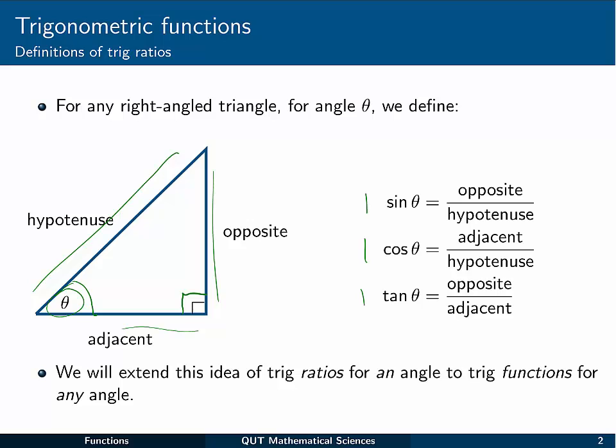Now you can imagine that these different values would change when you have differently shaped right angle triangles. So right triangles with very shallow angles theta, like this one, would have different sine, cos, and tan values to a triangle that looked more like this one.